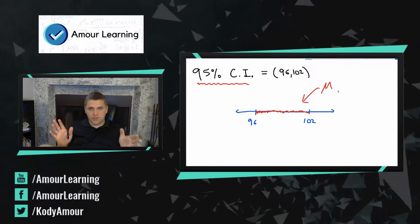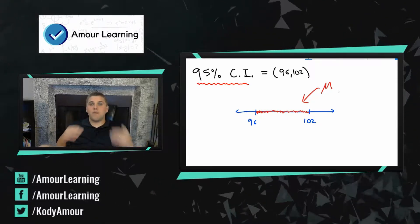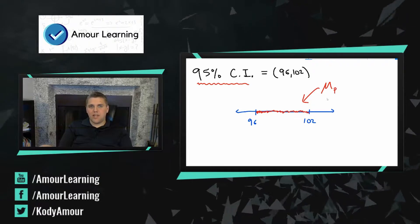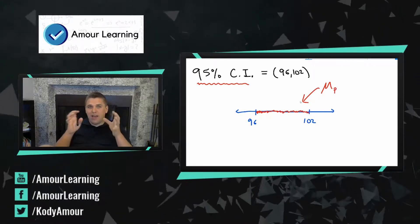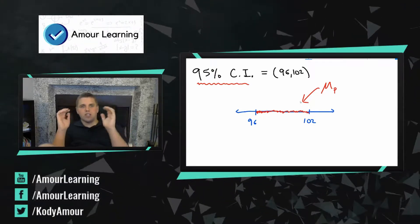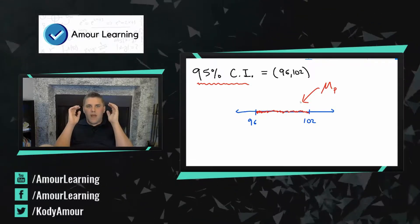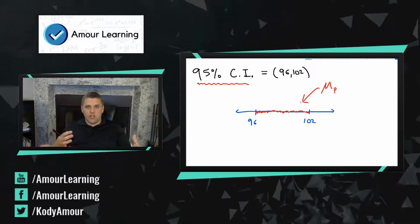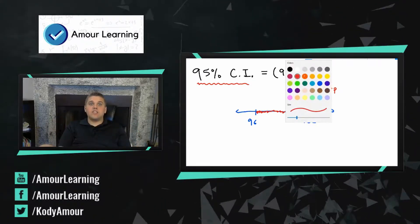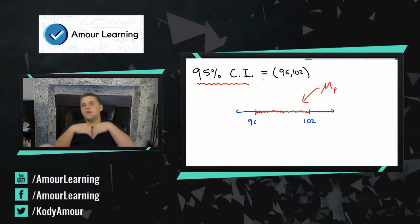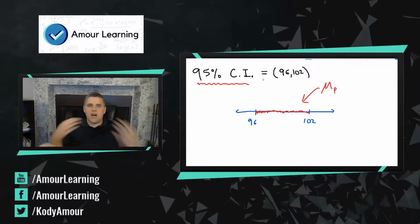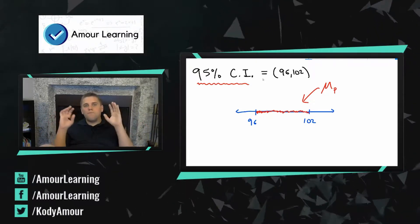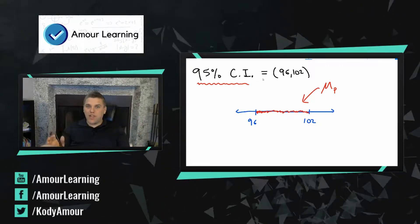Remember the whole purpose of statistics is to figure out information about the population. When you're doing experiments, you generally tend to calculate averages, and you're trying to get at the population average. The best way to find that population average is through confidence intervals. Confidence intervals basically say: I have these two numbers, 96 and 102, and I'm trying to capture the population average. I don't actually know what the population average is — I'm never going to know that, and that's why we have confidence intervals. We accept the fact that we're never going to find the population average because that would require a census — we would have to sample the entire population.